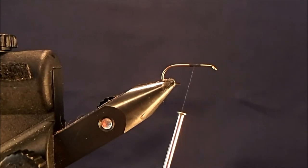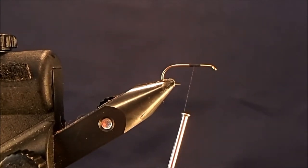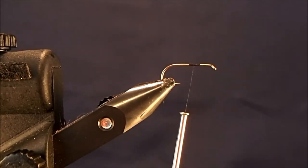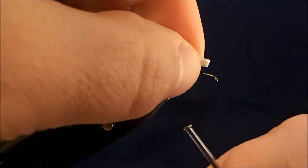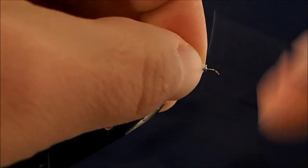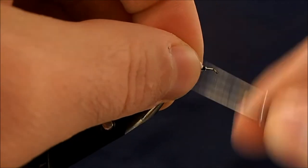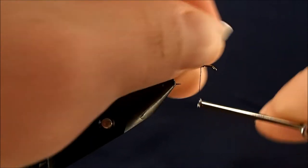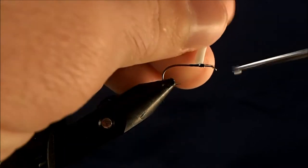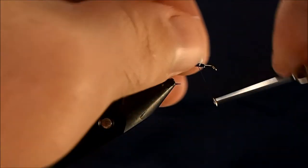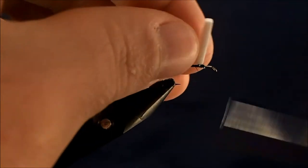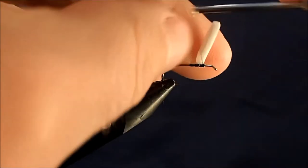I've just cut off maybe an eighth inch section of foam and I'll begin to tie that in on probably about the front two thirds from the back of the hook, just like you would any post. Not a necessary step but I like to have some additional visibility to it.